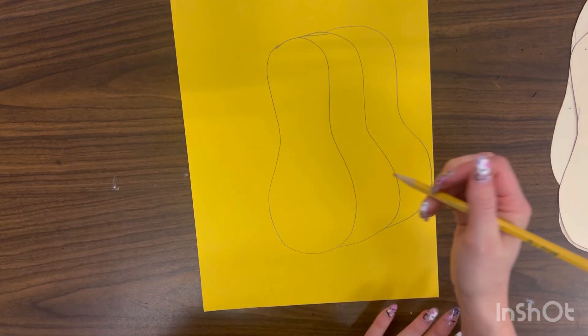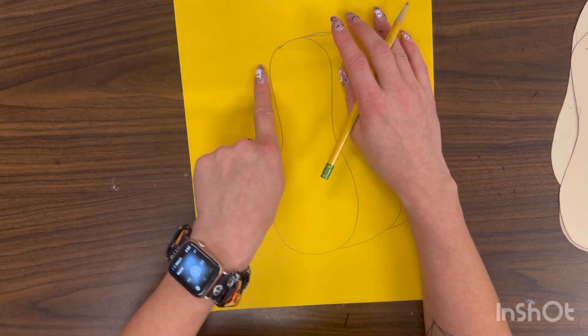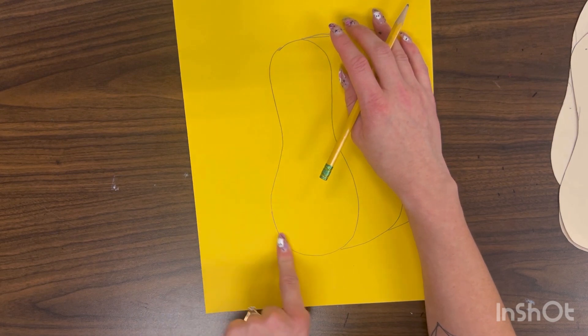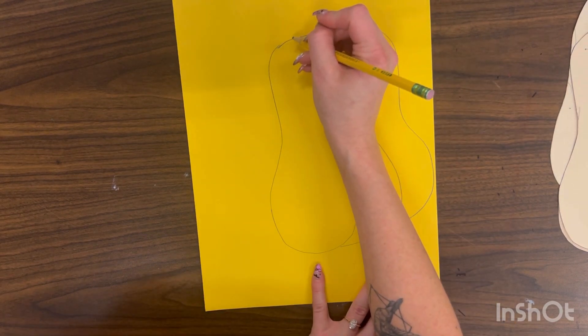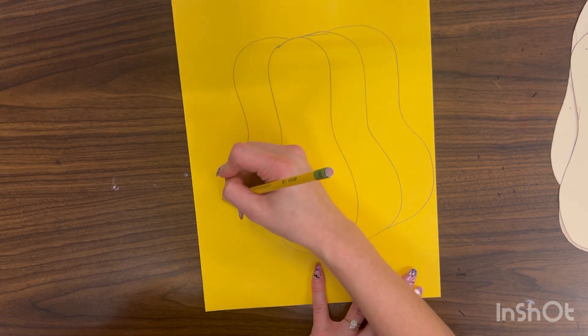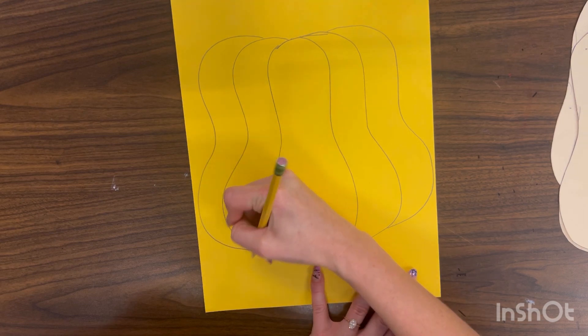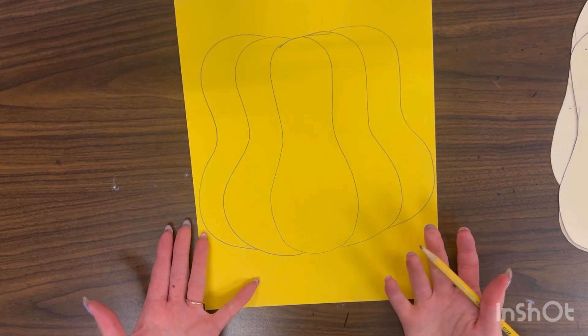Now my pumpkin's starting to grow, and I'm going to do it again on the other side. But I'm going to practice this line first. It does the same thing: out, down, out, touch. So I'm going to repeat those steps, but on the other side. And now I have my pumpkin shape.